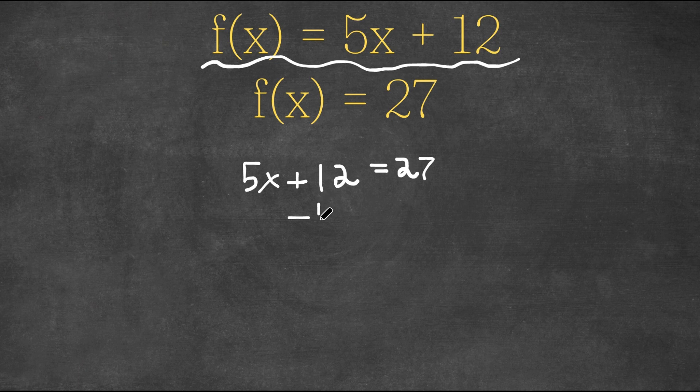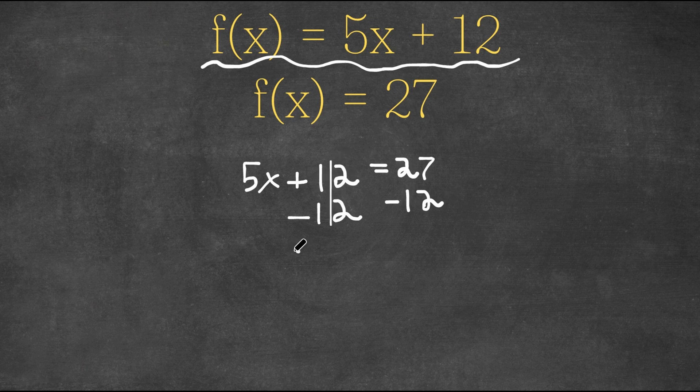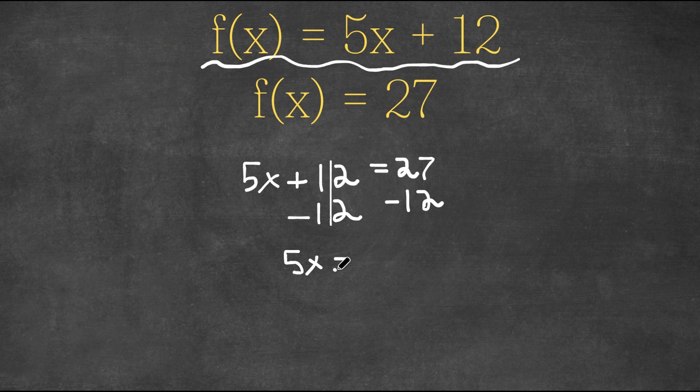So I'm first going to subtract 12 on both sides. These two cancel out and I get 5x is equal to 15, since 27 minus 12 is 15.